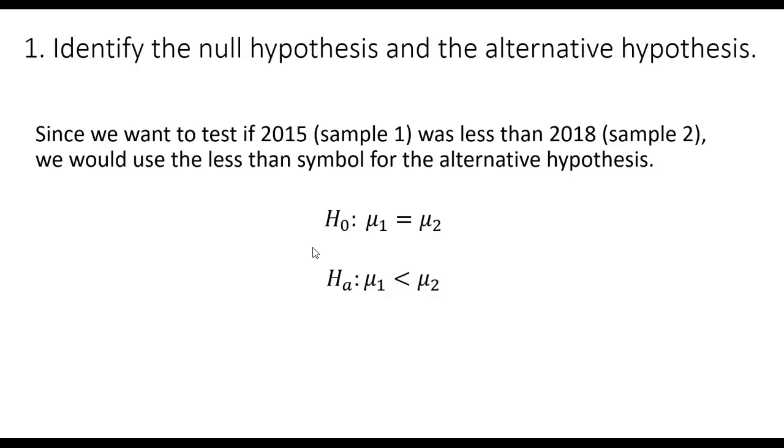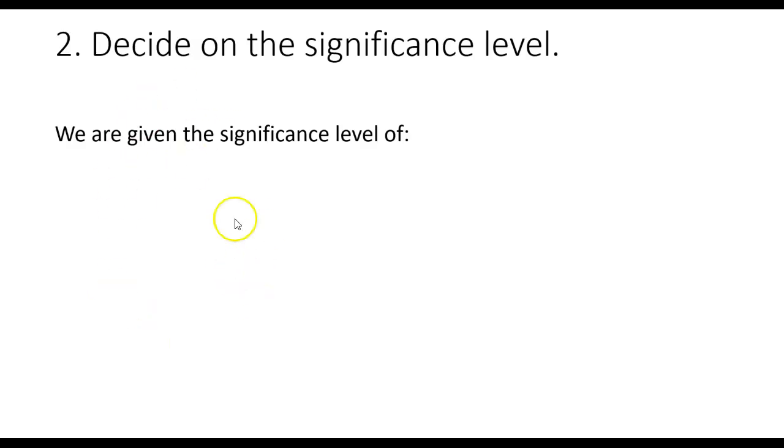As we mentioned, the alternative hypothesis is going to be less than: 2015, mu sub 1, is going to be less than 2018, mu sub 2. And that's how we write our null and alternative hypothesis. Because this is a less than symbol, we are going to have a left-tailed test. We are given the significance level of alpha equals 0.01.